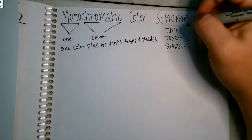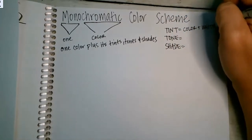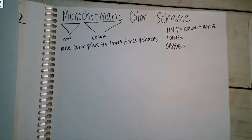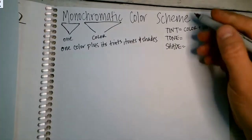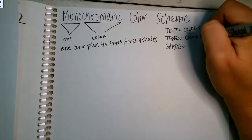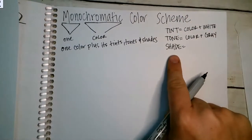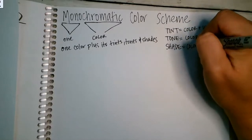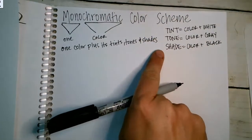Tint means color plus white. I know that's a little confusing because when we tint our windows in our car they're darker, but in art that word tint means color plus white. Tone means color plus gray. And shade — think about going in the shade of a tree on a sunny day — means color plus black. So tints are lighter, shades are darker.